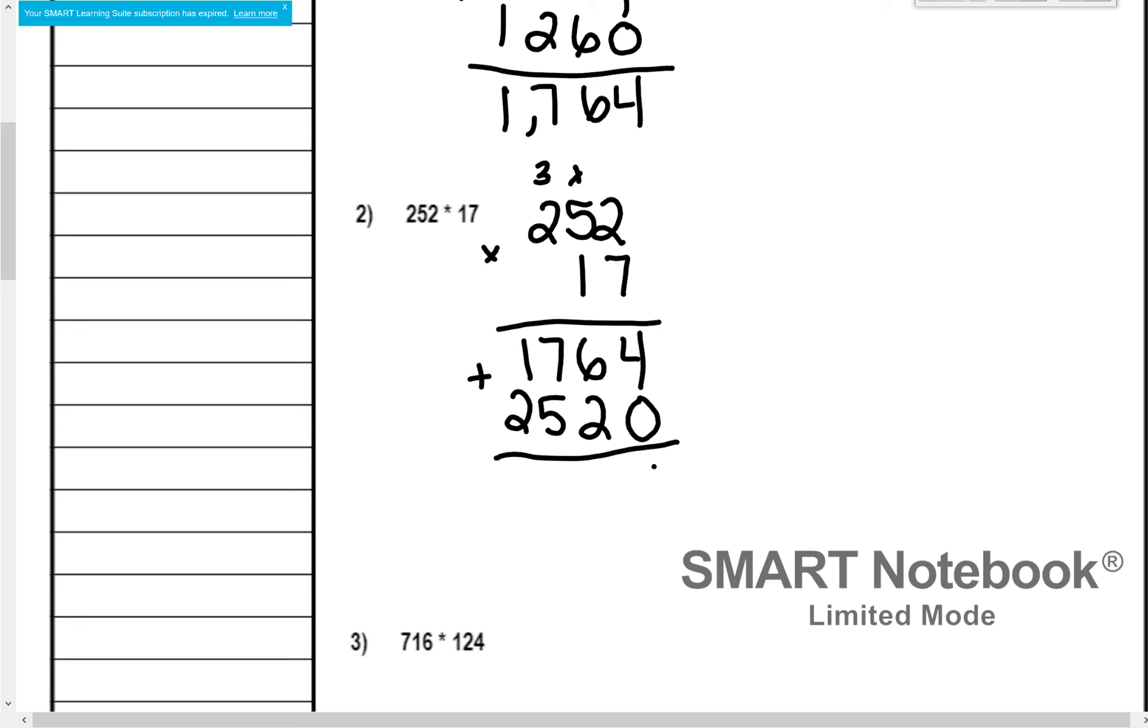4 plus 0 is 4. 6 plus 2 is 8. 7 plus 5 is 12. Carry the 1. 2 plus 1 is 3. Plus 1 more is 4. I find out where my comma goes. And it's 4,284.